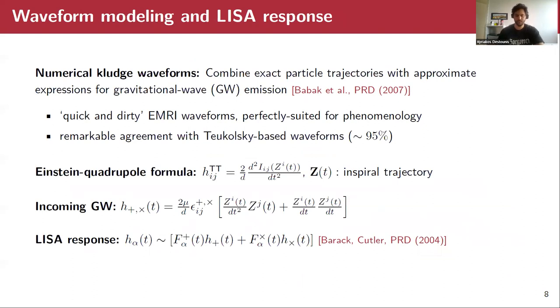Now, we need to know what the waveforms will look like in these kind of scenarios because it's really hard to understand the orbital characteristics from a waveform when we receive those, and we will use here the numerical kludge waveforms, which combine the exact particle trajectories with approximate expressions of the gravitational wave emission through the quadrupole formula. Therefore, the quadrupole formula only depends on the inspiral trajectory, and from that we can have the incoming gravitational wave in a detector, which we assume is at distance d, the luminosity distance. The LISA response comes from a combination of the plus and cross polarizations of the gravitational wave and these antenna pattern functions f plus and f cross that depend on the LISA detector.